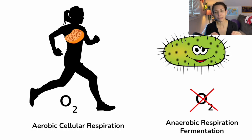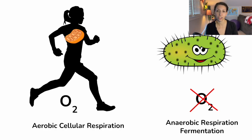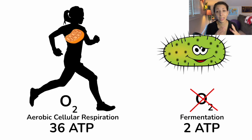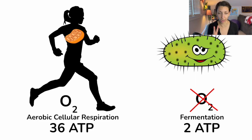Those details are a little high-level, so if you're in regular biology or not ready to get into the weeds with college-level or AP-level biology content, that's okay. Just be aware that aerobic cellular respiration involves oxygen and anaerobic respiration does not. One of the main things to remember is that compared to aerobic cellular respiration, which produces 36 ATP, fermentation only produces two ATP.